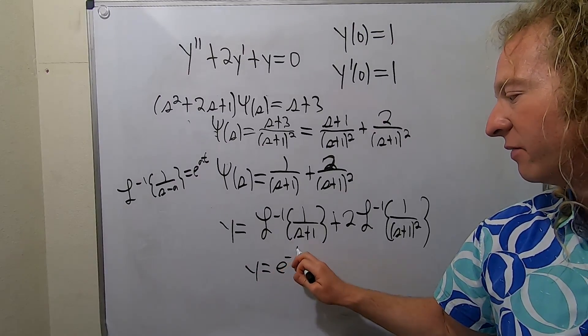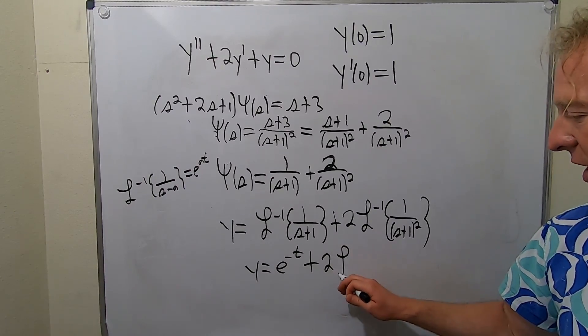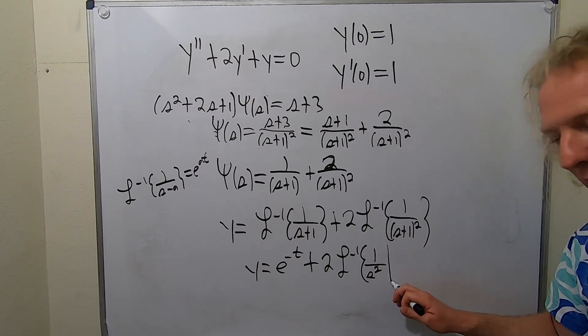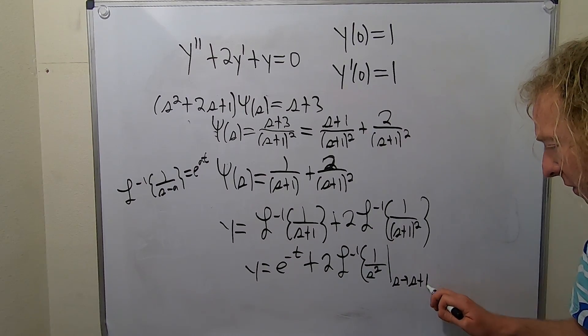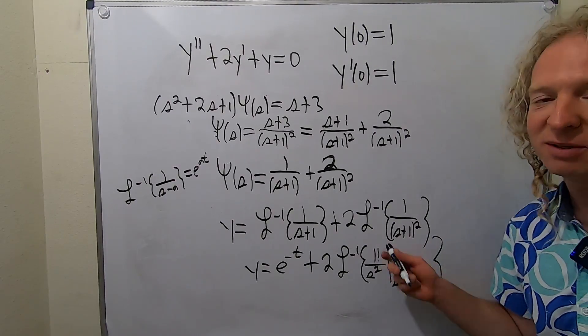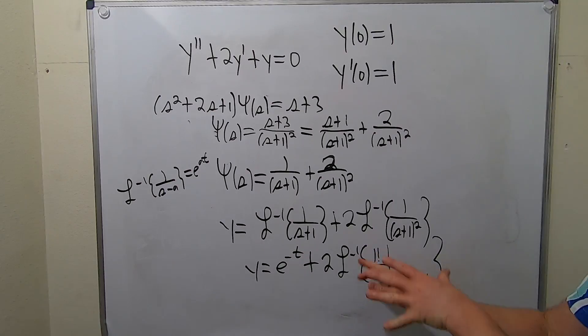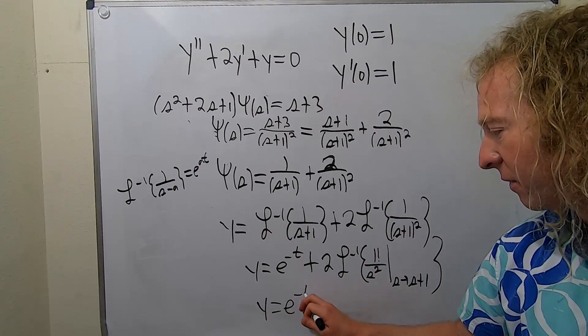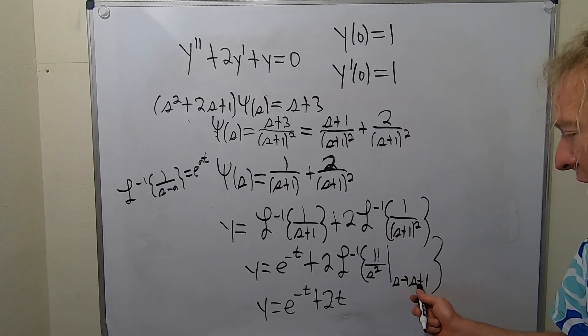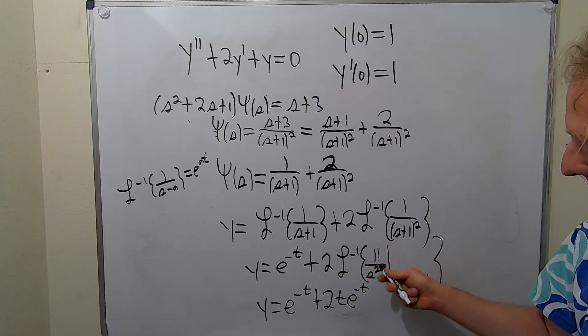So this is E to the negative T plus this bad boy requires some work. So this is two inverse Laplace. We should do a shift. We can take S to S plus one by writing the line and using the first translation theorem. And we need this to be one less factorial, but it already is because one factorial is one. So whenever you have something like this, you use that shifting theorem, the first translation theorem. Now we're good to go. So this is E to the negative T plus two. This is T right from the formula T. And this one, whenever you do the shift, it's going to give you E to the negative T because it's S minus A, but it's negative. And remember this one's T. That's that formula.